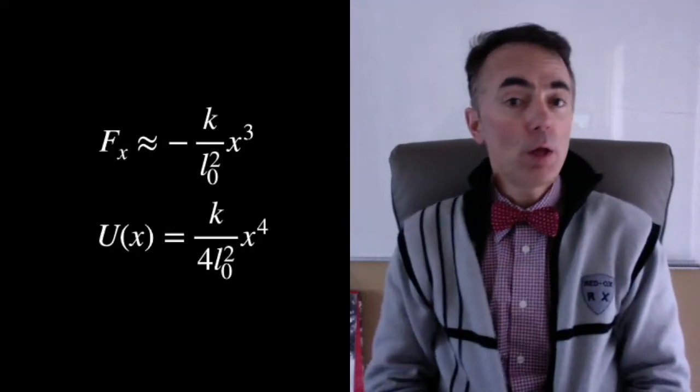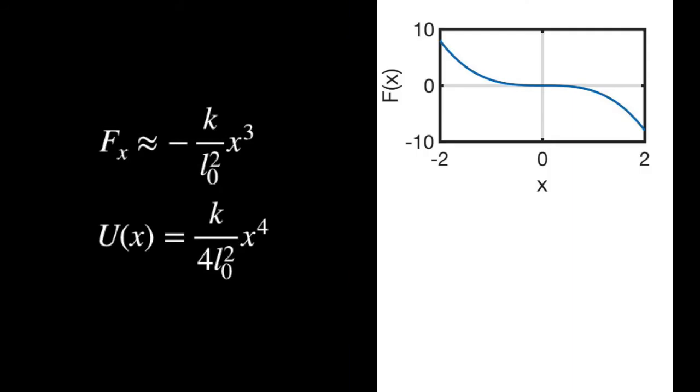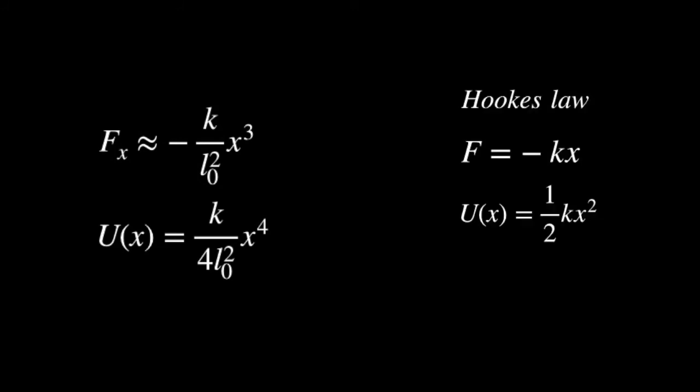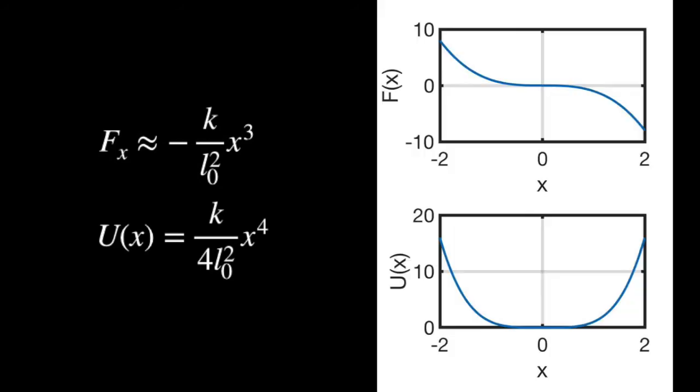We can plot the force as a function of the position and the potential as a function of the position. Remember that in the case of Hooke's law, we had a potential in terms of x squared. That was a parabola, but not here. This is still a symmetric potential, though. The same happens for positive x as for negative x. But we can't use the quadratic approximation for the potential.